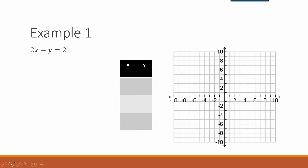Let's take a look at a few examples. The first one is 2x minus y equals 2. You want to solve the equation for one variable — normally that is y — so I'm trying to get y by itself. Subtract the 2x from each side, which leaves us with negative y equals negative 2x plus 2. Then divide each side by negative 1, leaving us with y equals 2x minus 2. That's the equation we're going to use.